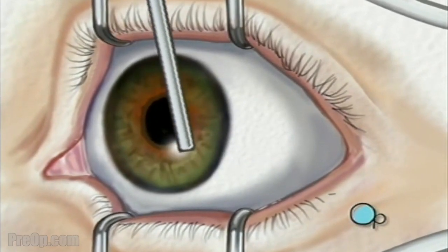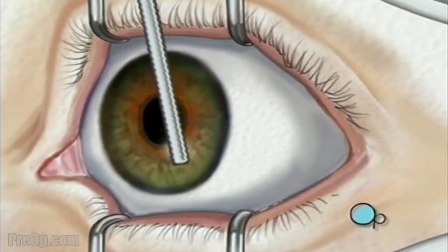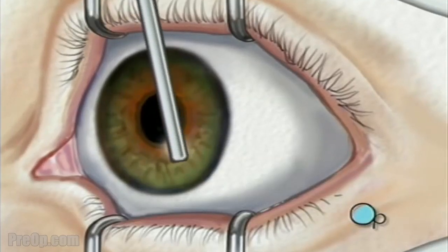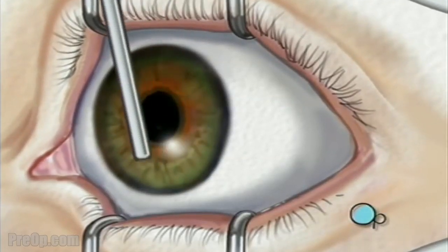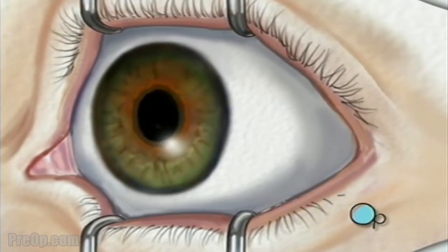When the operative field is numb, the doctor will carefully remove the epithelium, or top layer of cells, exposing the stroma, the non-cellular portion of the cornea.